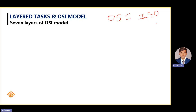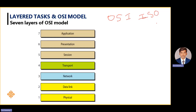Normally, this OSI model consists of seven layers. If I come from a bottom-up approach, there is the physical layer, data link layer, network layer, transport layer, session layer, presentation layer, and application layer.